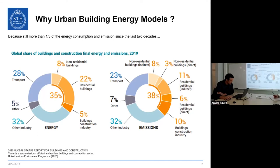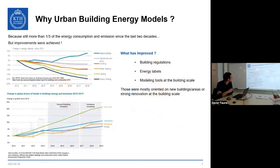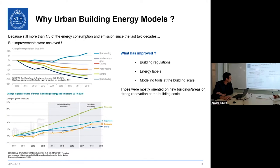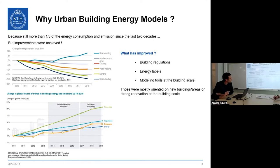That doesn't mean nothing has been done — there have been lots of improvements. A chart from IEA 2019 shows energy intensity for different uses has improved by quite a large amount. Space heating is down 20% over the last 10 years. Space cooling has increased due to growing demand. Overall energy and emissions still increase, but at a lower rate per floor area, thanks to building regulations and modern tools.